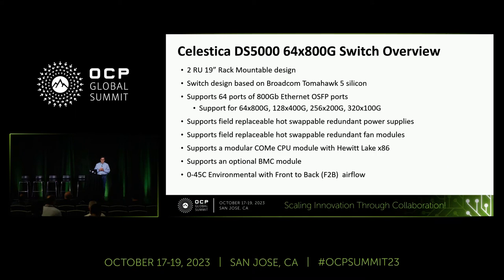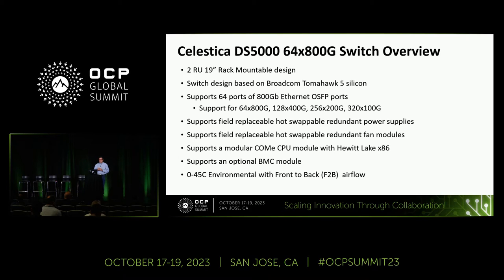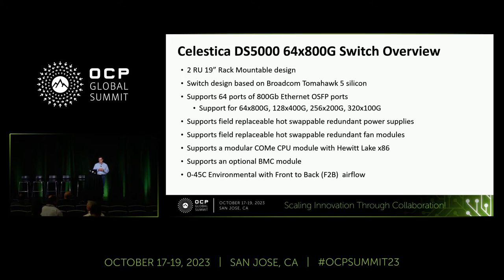This contribution is a 64 by 800 gig switch designed on the Broadcom Tomahawk 5 silicon. It's a 2RU design, rack mountable in a 19-inch rack, supporting 64 physical ports of 800 gig Ethernet through OSFP connectors. The design allows breakout to very high scale port counts: 128 400-gig ports, 256 200-gig ports, or 320 100-gig ports — making it both a very high capacity and very high radix design.